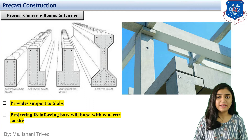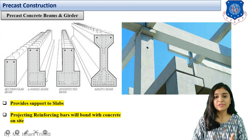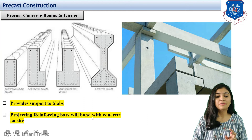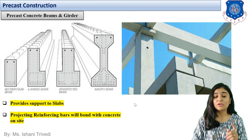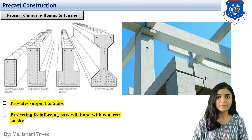Apart from these four, more different shapes exist. The major function of precast beams is to provide support to the slab. Projecting reinforcing bars will bond with concrete on the side, meaning a small amount of on-site concreting work will be done to provide bonding between connected members.